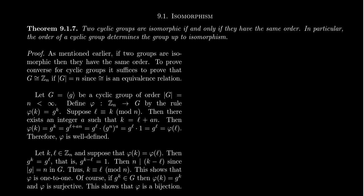We actually want to prove this right now. What we'll call theorem 9.1.7: Two cyclic groups are considered isomorphic if and only if they have the same order. In particular, the order of a cyclic group determines the group up to isomorphism. Now, one direction is very clear. We proved previously that if two groups are isomorphic, then they have the same order. So that direction is pretty straightforward from what we've already seen previously.